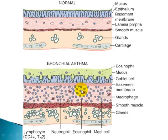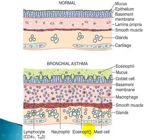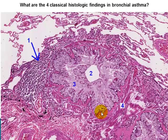Airway remodeling features include: thickening of the airway wall, edema and inflammatory infiltrate (eosinophilic in atopic asthma), increase in the size of submucosal glands with goblet cell hyperplasia, and hypertrophy and hyperplasia of the bronchial smooth muscle wall. These four features collectively constitute airway remodeling. Normal structure has epithelium, thin basement membrane, thin mucus layer, lamina propria, smooth muscle, and submucosal glands.